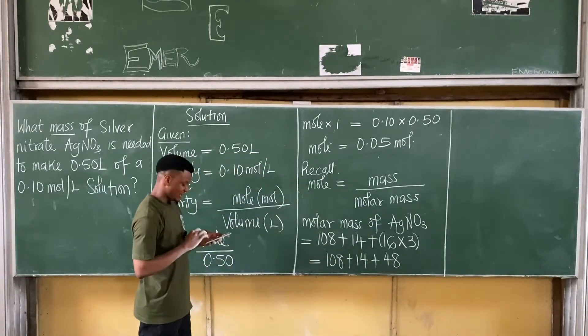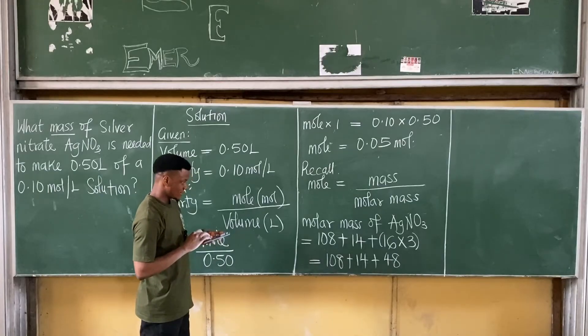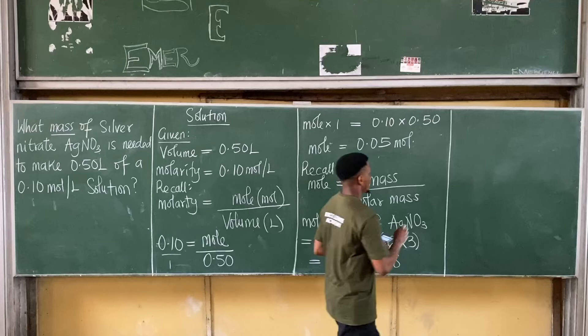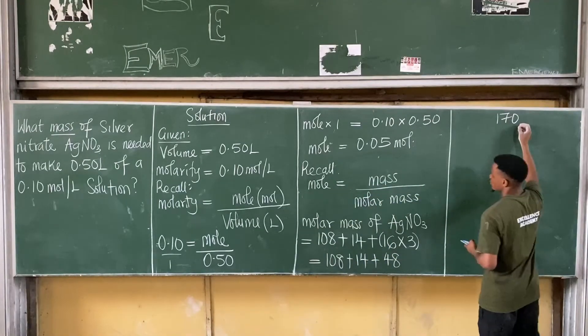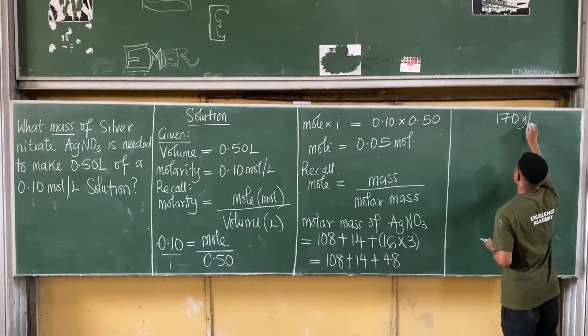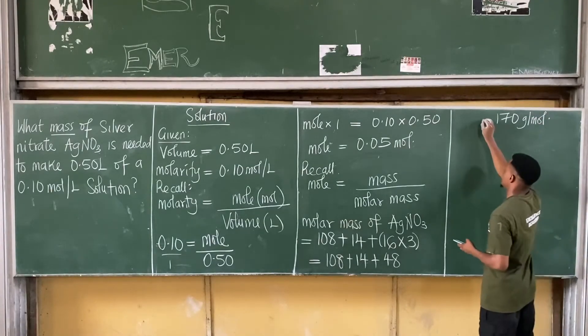48. Alright, so let's add them, let's sum them. 108 plus 14 plus 48, that gives you 170. So the molar mass is 170. Molar mass is measured in gram per mole. That's the molar mass.